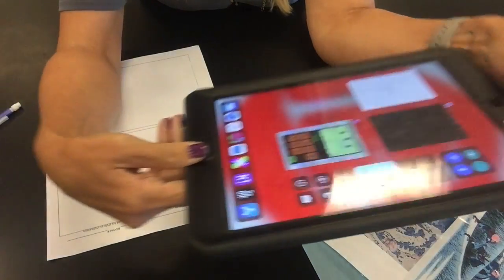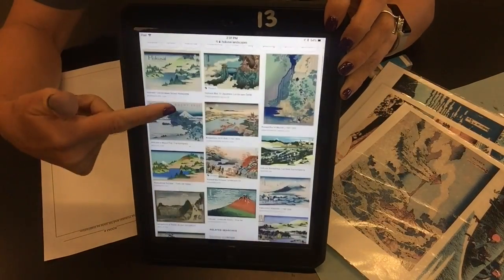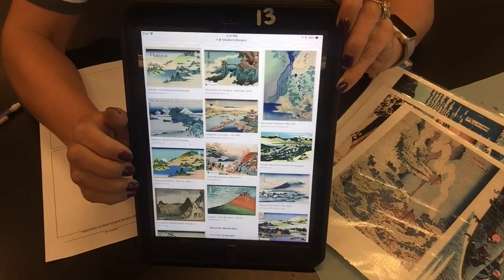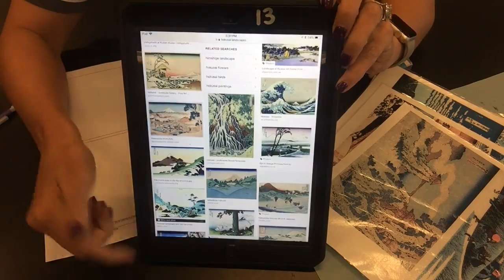If you tap on that, it will take you to the Google images for Hokusai. So that'll save you guys some time. I would like you to only go there when you are looking on the iPads for images of Hokusai.